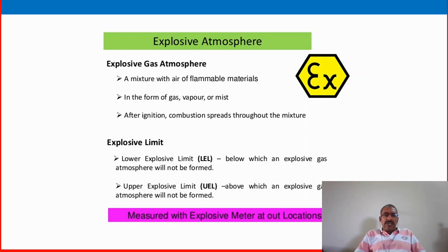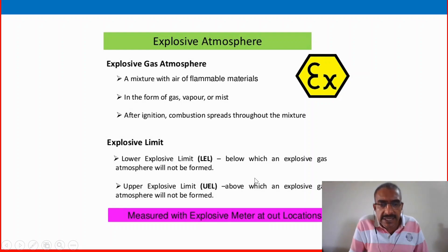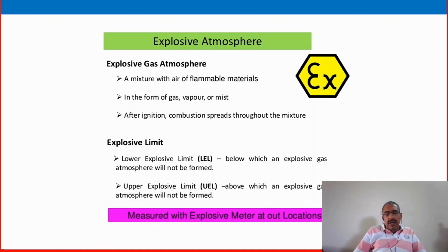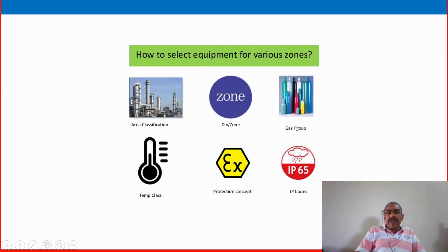Explosive atmosphere: an explosive gas atmosphere is a mixture with air of flammable material in the form of gas, vapor or mist. After ignition, combustion spreads throughout the mixture. The explosive limits — LEL and HEL — were already discussed in our previous fire and gas detector session. Gas detectors are used based on LEL and HEL. Based on the area classification, we can select equipment used in that zone or division — Zone 0, 1, or 2.